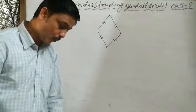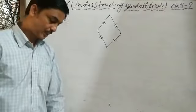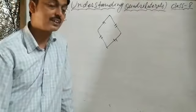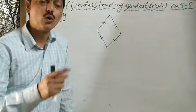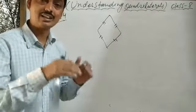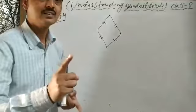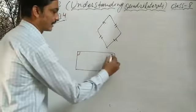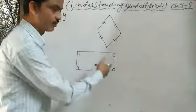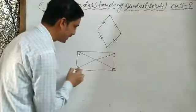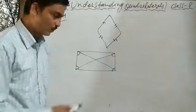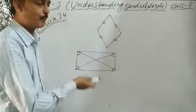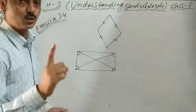Question 5: Explain why a rectangle is a convex quadrilateral. A convex quadrilateral is one in which all diagonals lie on the interior part and no angle is greater than 180 degrees. In a rectangle, all angles are 90 degrees, which is less than 180 degrees, and the diagonals are also in the interior. Therefore, the rectangle is a convex quadrilateral.